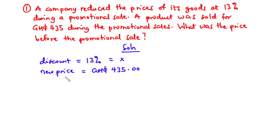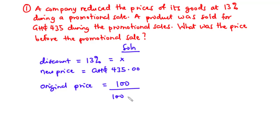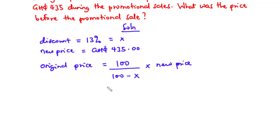The question asks for the price before the promotional sale, so we need to find the original price. We said original price equals 100 divided by (100 minus x), times the new price. With x equal to 13, that becomes 100 divided by (100 minus 13), times 435 Ghana cedis.